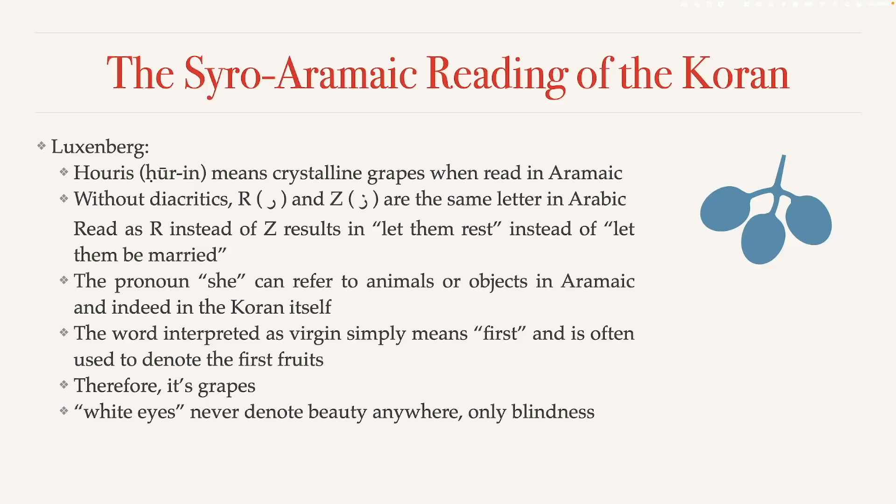Similarly, the word interpreted as 'big-breasted,' Luxenberg says, just means 'lush' — so lush grapes or vines, not big-breasted virgins. Therefore, Luxenberg argues we're looking at grapes and not virgins. Also, when you think about the 'white eyes' description, there is no language in the world, no culture at any point in time, which ever describes beauty by referring to white eyes. When you want to describe beautiful eyes, one typically says black, brown, blue, or green — but never white.